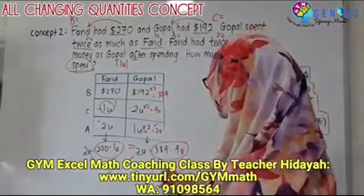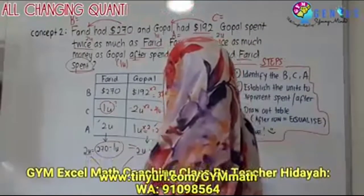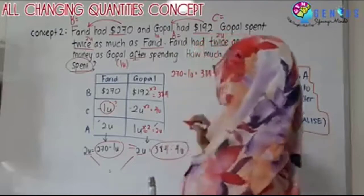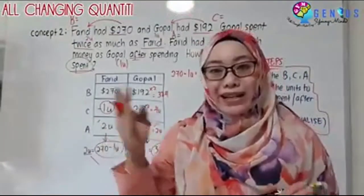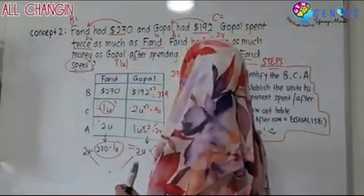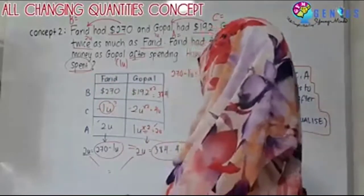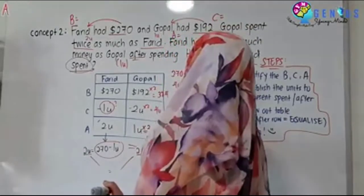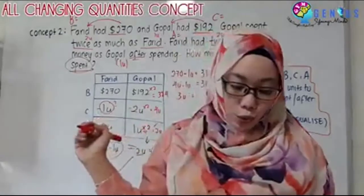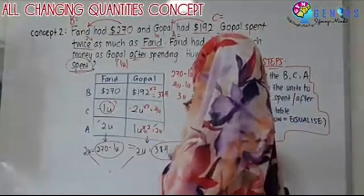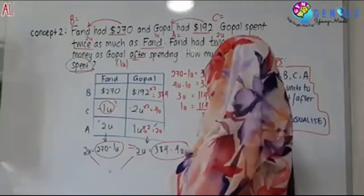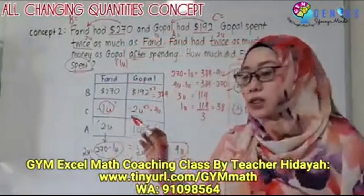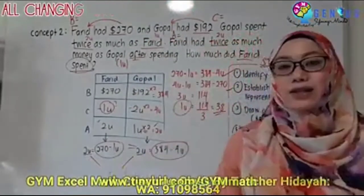We rewrite the equation and solve: 270 minus one unit equals 384 minus four units. Group all units to one side and all numbers to the other: four units minus one unit equals 384 minus 270. Three units equals 114. One unit equals 114 divided by 3, which equals 38. We check what we want to find — we want one unit. We got it, so $38 is our answer.